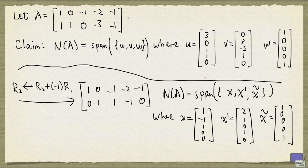Now if you have trouble seeing this, try to write out a proof to convince yourself. So once you have written each of x, x prime, and x tilde as a linear combination of u, v, w, then taking linear combinations of x, x prime, x tilde is merely taking linear combinations of u, v, and w.